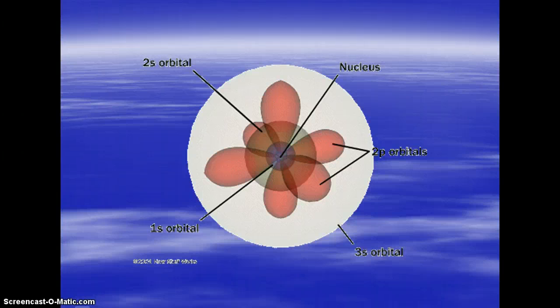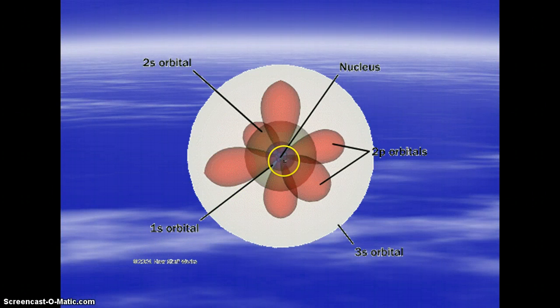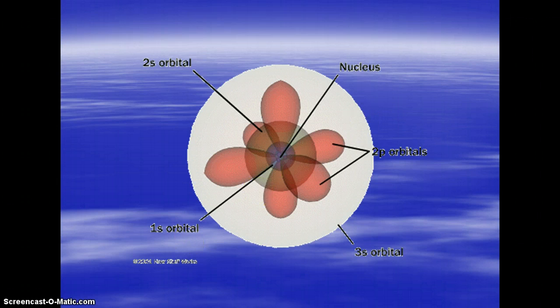Here's another picture of it. You have the nucleus in the very center, the 1S orbital closest to the nucleus, then the 2S orbital, then the 2Ps, and then lastly the 3S. So they just come out more and more — as the energy level increases, the distance from the nucleus also increases.